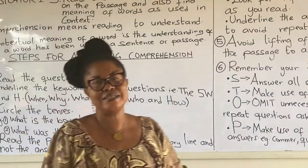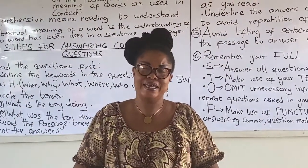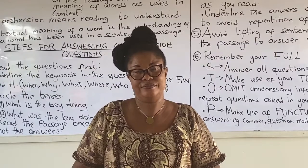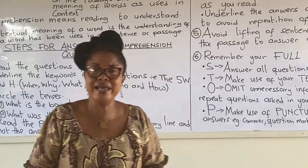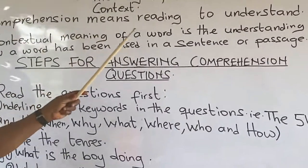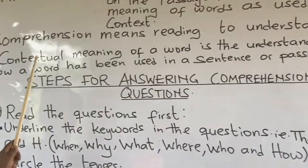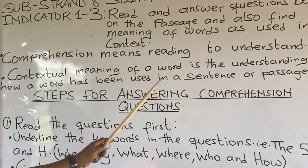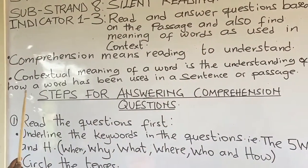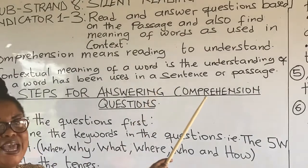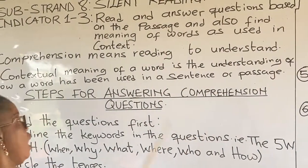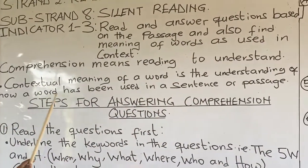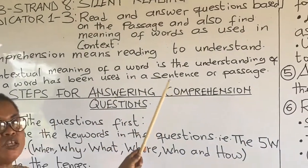Now, before we start, let's look at the two key words here, which are comprehension and words in context. Comprehension means reading to understand. Contextual meaning of a word is the understanding of how a word has been used in a sentence or passage.